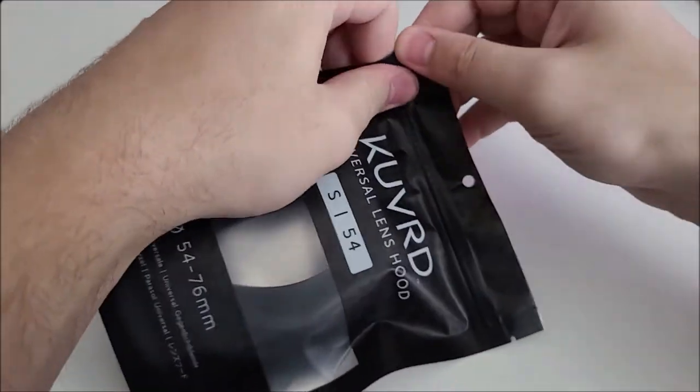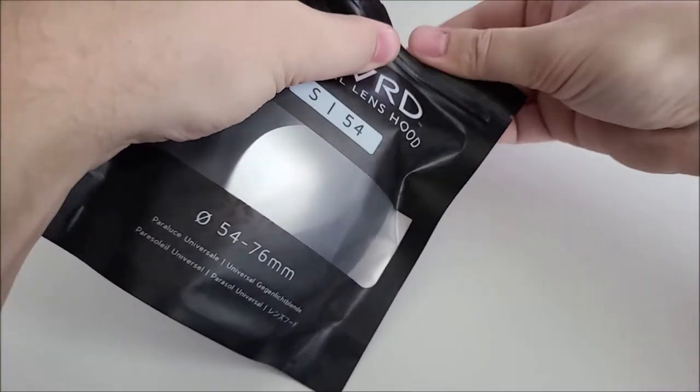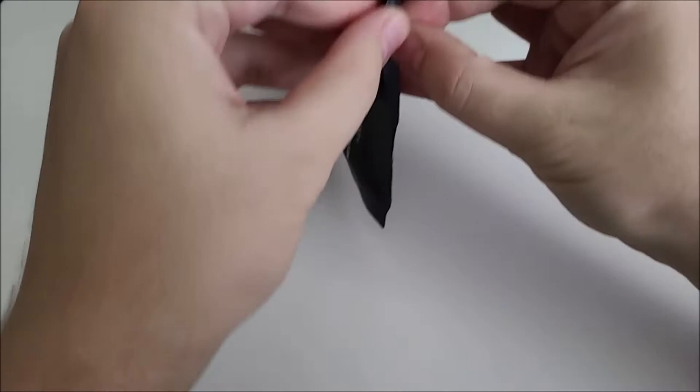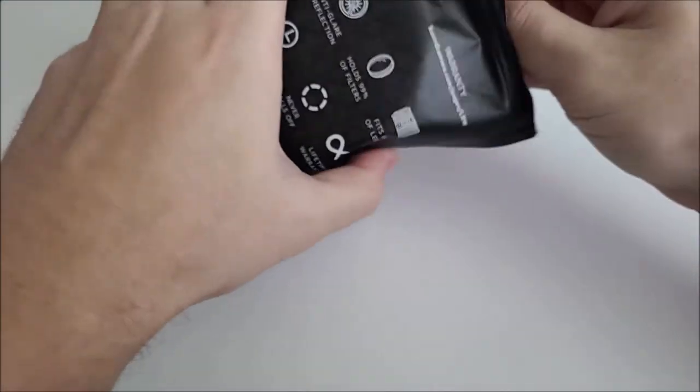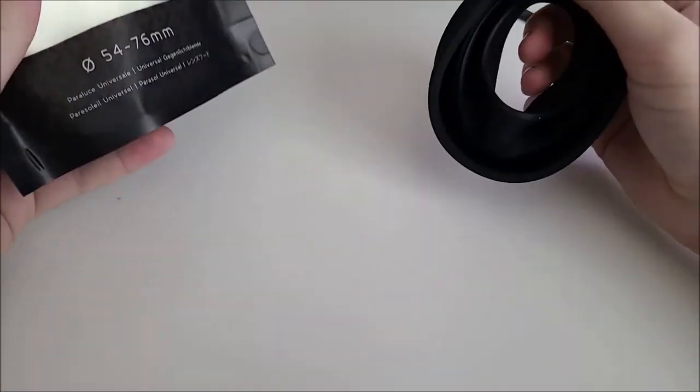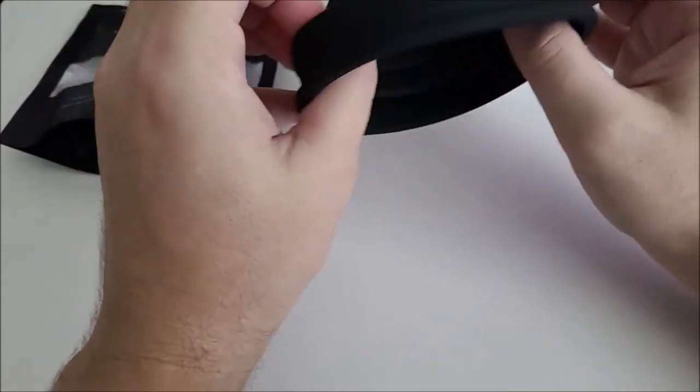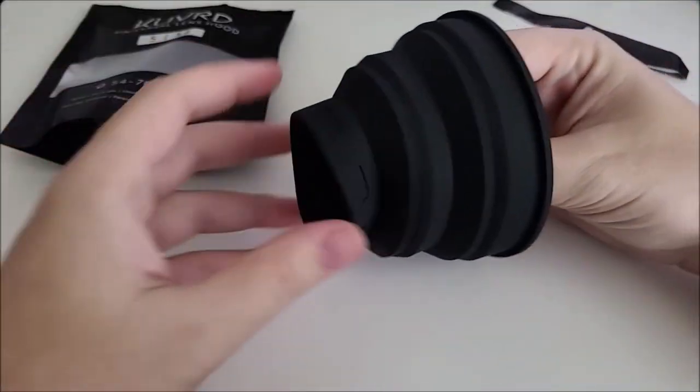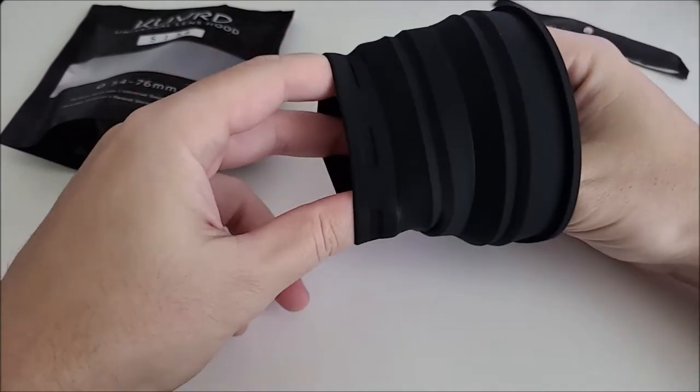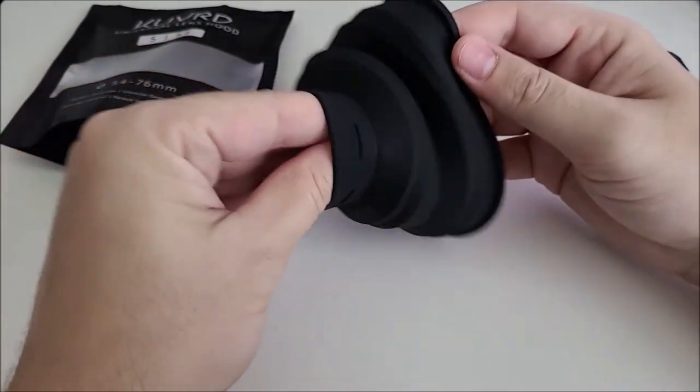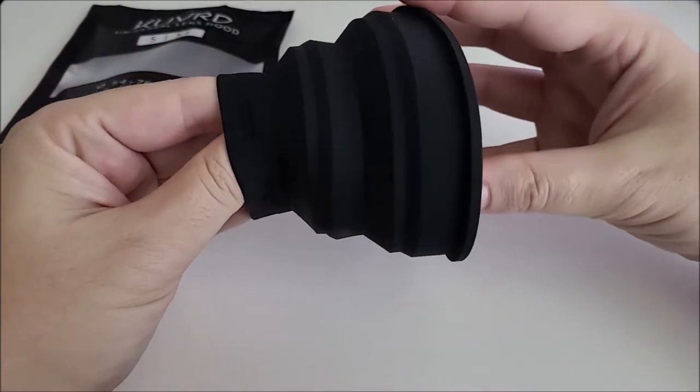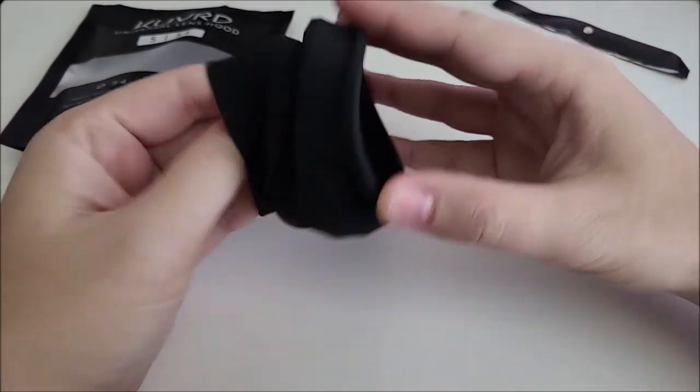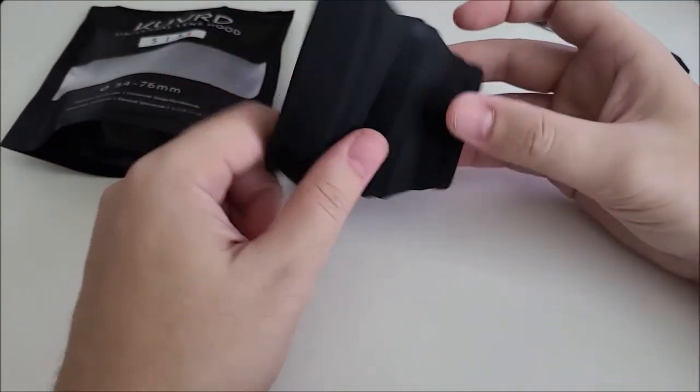So basically rip the bag, and that releases the rubber lens hood. So basically this fits over top of a lens and gives you the ability to change the diameter of how much depth you want on the lens so you can fold it up.